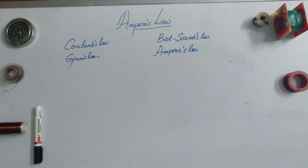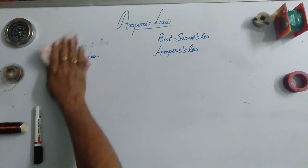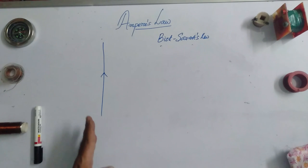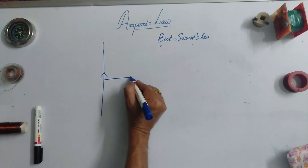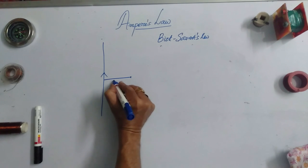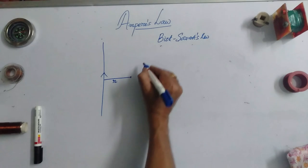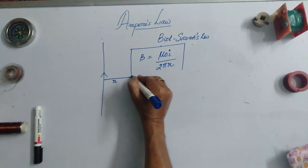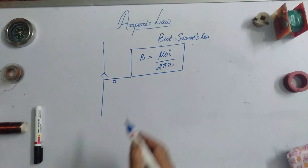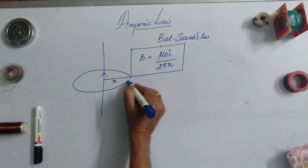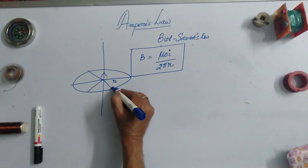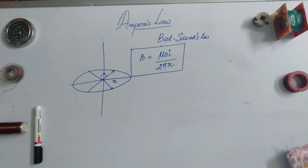What is Ampere's law? We studied from Biot-Savart's law that if we take a long or infinite current-carrying conductor and want to measure the magnetic field at a distance r, we proved that this magnetic field is equal to μ₀i / 2πr. This magnetic field is the same at all points on the circle of radius r.